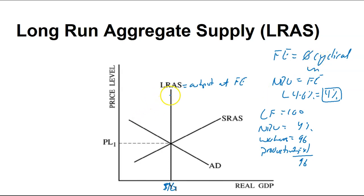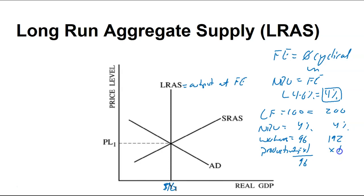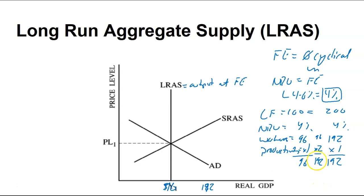What can change the LRAS? Anything that can change productivity. Or if you change the number of full employment workers — what if I now have 200 workers? Then I have still four percent, so I have 192 people working times one, and now my full employment is at 192. Or what if I'm still at 96 but my productivity has doubled for whatever reason — technology or whatever else. It can go the other way as well. Plugging into this simple concept can help you identify if there's a change to the LRAS.